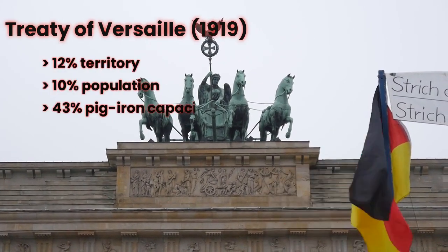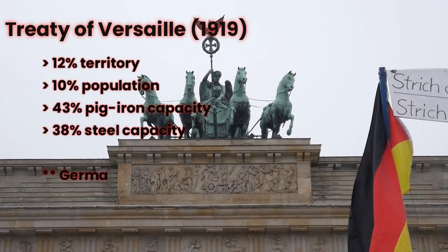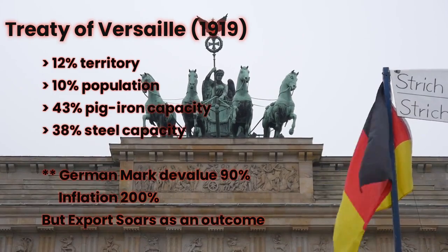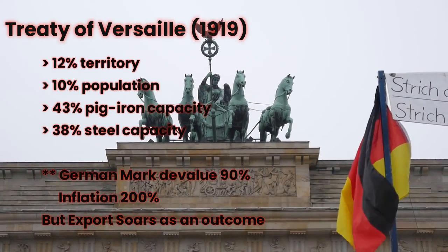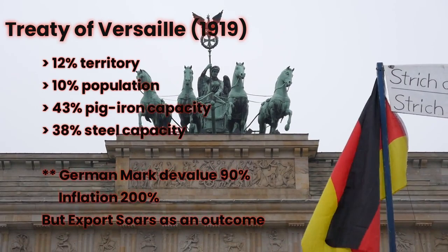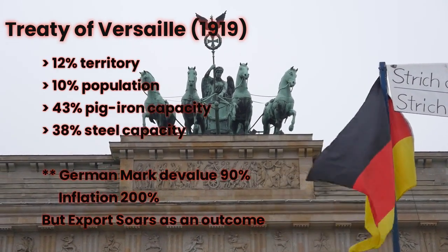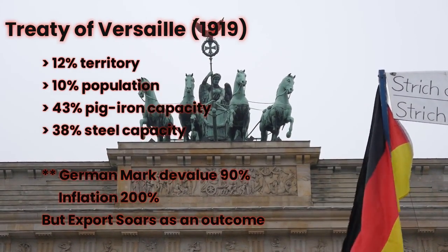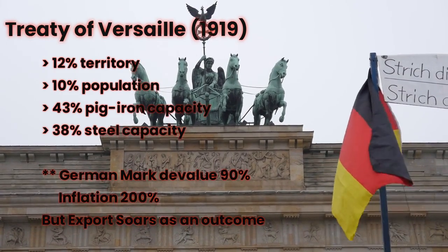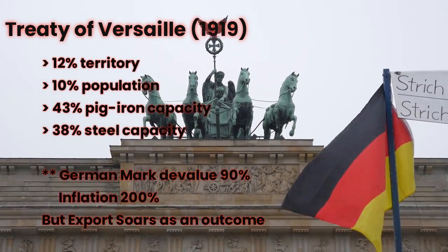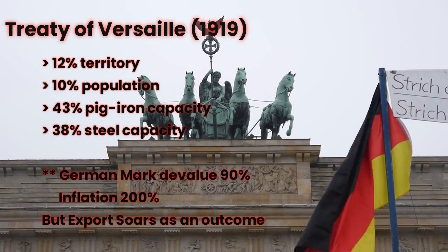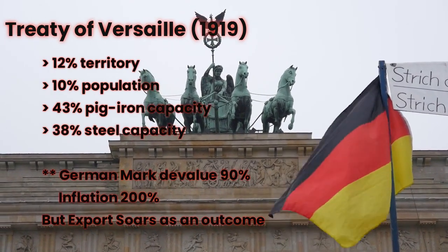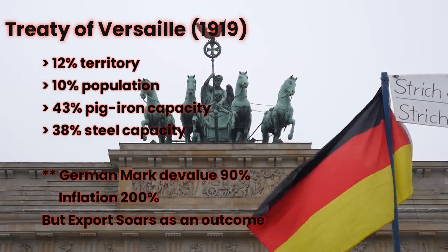To understand the hyperinflation crisis, we first need to look at the conditions that Germany faced after World War I. At the end of the war, the Treaty of Versailles, signed in 1919, imposed heavy reparations on Germany. Germany lost 12% of its territory, 10% of its population, 43% of its pig iron capacity, and 38% of its steel capacity. The German mark lost 90% of its value between 1919 and 1920, and inflation soared as high as 200% over the period. But the devaluation of the mark led to strong exports, as German goods became cheap, and the economy stabilized by early 1921.